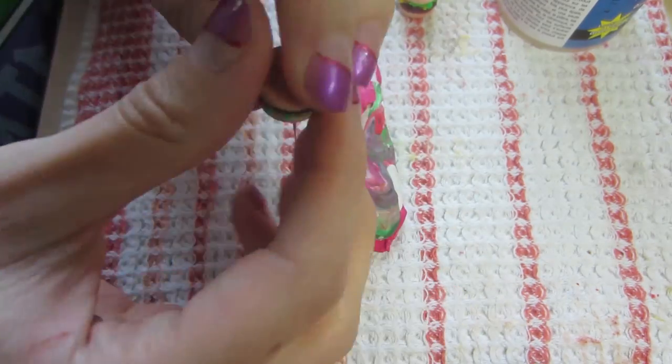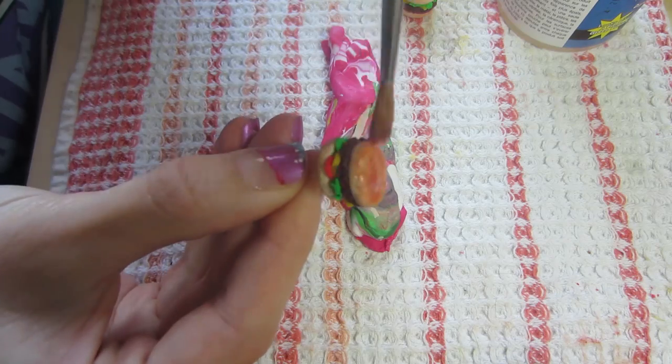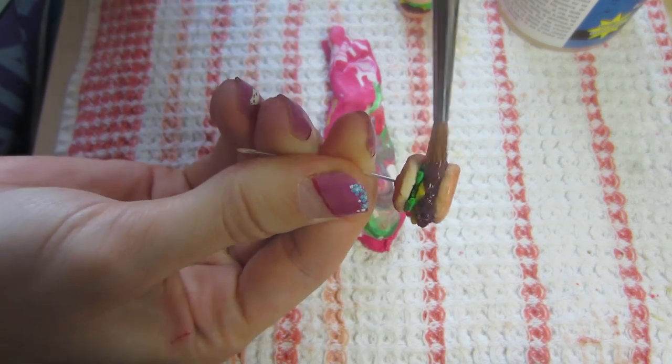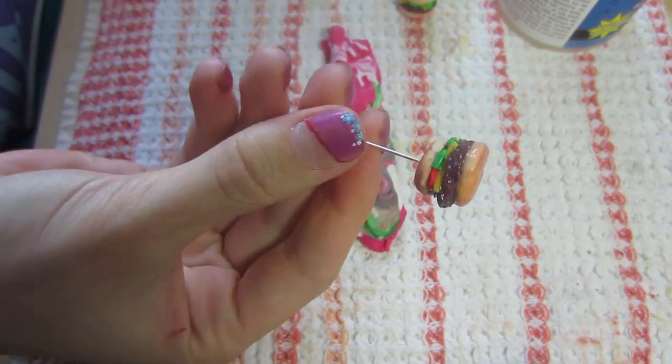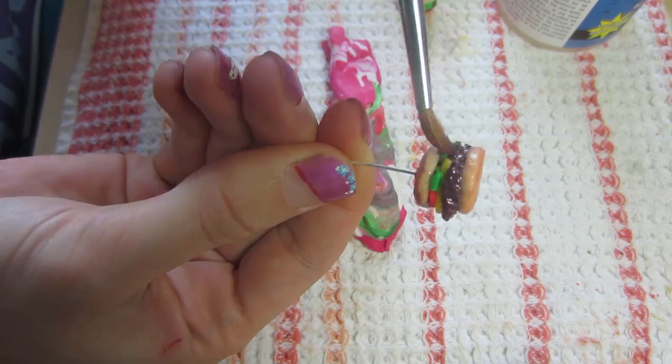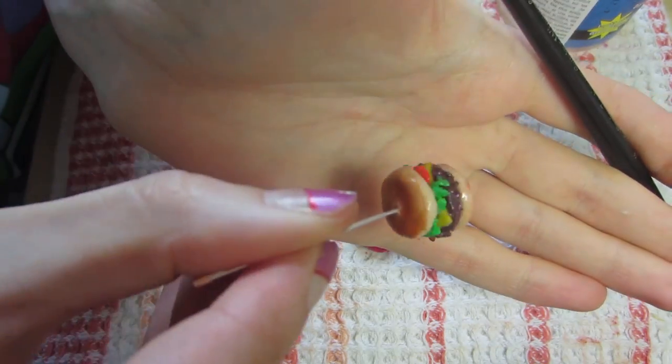So once you're done baking, use some gloss. I'm using triple thick all over the bun or the burger in general I should say. And let that dry.